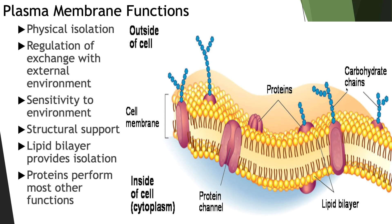One of the most important concepts in this part of the module is going to be the function and features of the plasma membrane. Some of its functions include physical isolation — it protects the cell — the regulation and exchange of the internal environment, meaning bringing things in and releasing products back outside of the cell. It is sensitive to the environment, can respond to changes outside of it, and provides structural support to the tissue. The lipid bilayer provides selective isolation, and proteins perform most other functions for things that can't freely move across it.